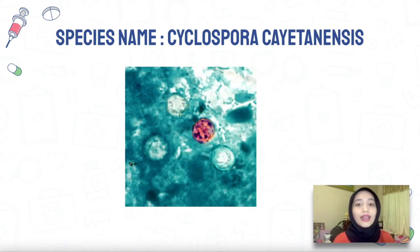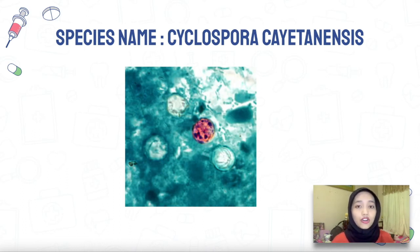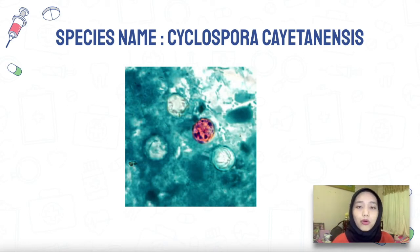During 1995, an outbreak caused by Cyclospora occurred in the United States and Canada due to the import of raspberries. Moving on to the characteristics, each organism has a general classification from phylum to genus. For Cyclospora: phylum Apicomplexa, class Coccidia, order Eucoccidiorida, family Eimeriidae, and genus Cyclospora.